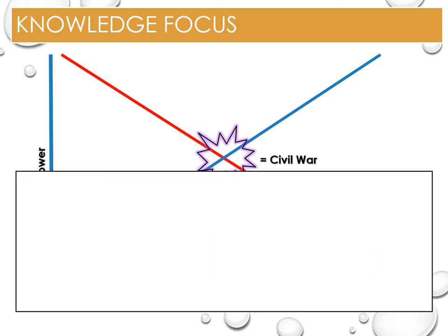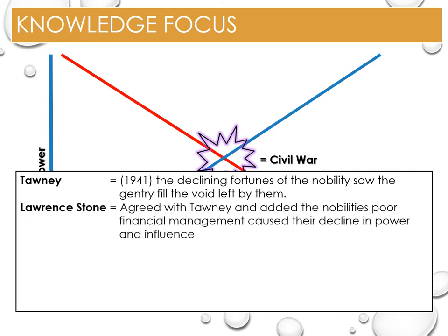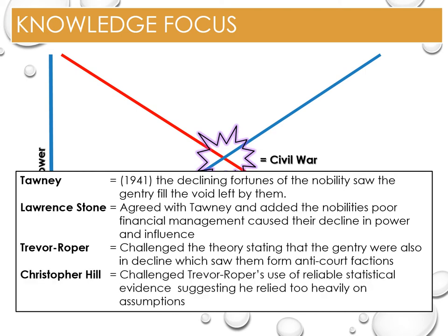The historians involved are R. H. Tawney, who argues this crisis caused the civil war, being the declining fortunes of the nobility and the increasing power of the gentry, filling the void left by the nobility in business and finance. The Marxist historian Lawrence Stone agreed with Tawney and added that the nobility's poor management of finance was the root of their decline. In the 1950s, Hugh Trevor Roper challenged this and suggested the gentry were also in decline, leading to them being disgruntled and forming anti-court groups against Charles. Christopher Hill, another Marxist, challenged Trevor Roper's evidence used to base his theories. It is important to remember these debates are based on generalisations and not all nobility and gentry changed. For example, though Oliver Cromwell was from gentry stock and rose to Lord Protector, many gentry lived out their lives within a few miles of their manor house without taking part in national or even regional affairs.